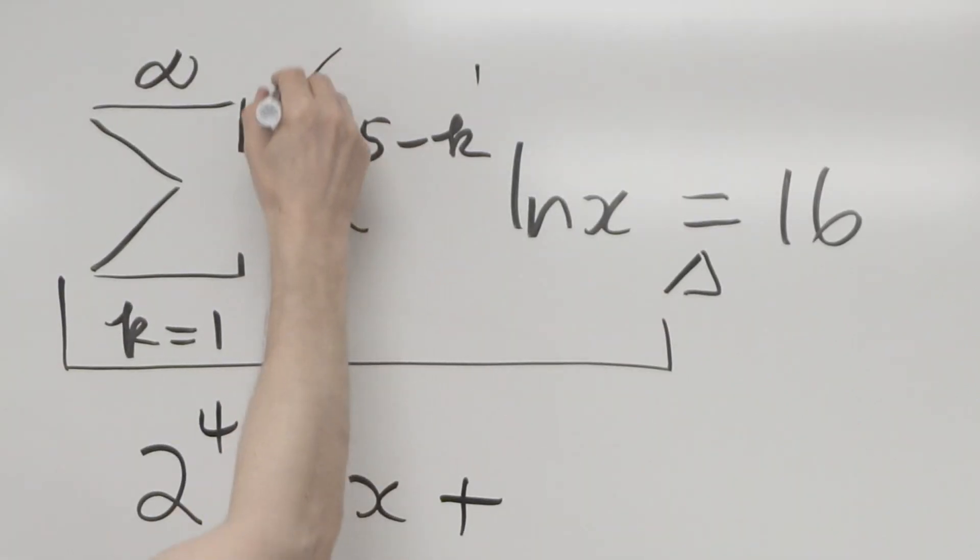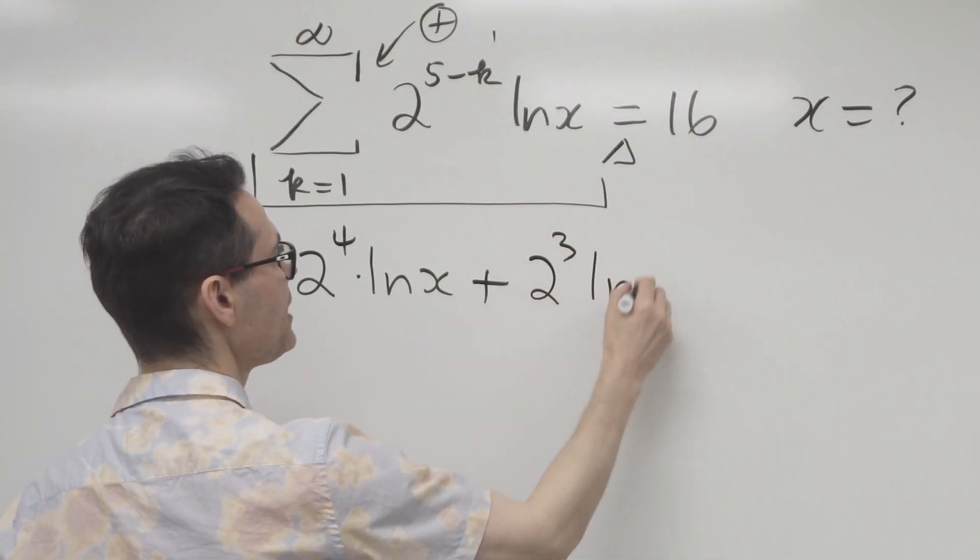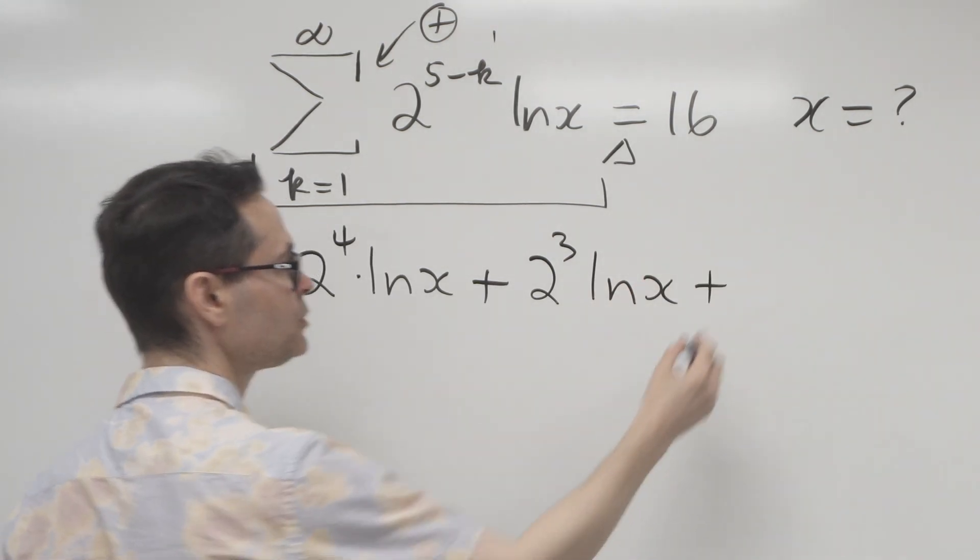Plus, so the summation operator means plus. Then I go to k is equal to 2, so it's gonna be 2 to the 3, times the ln of x, plus, I'll do one more, 2 to the 2,